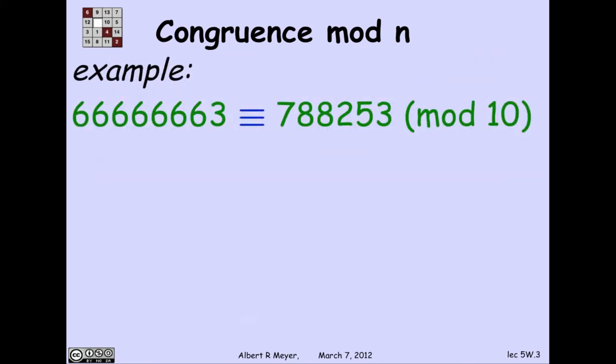OK. An immediate application is that this number, with a lot of 6's ending in a 3, is equivalent to 788,253, modulo 10. Now, why is that?